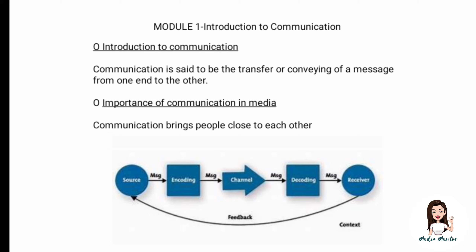After the channel is decided, the receiver's end is important — to decode the message. The receiver will analyze and understand what message is coming and receive it. So the basic process of communication is: source, encoding, channel, decoding, and receiver. The receiver then gives a response, which is known as feedback, and that feedback goes back to the source — the cycle keeps repeating.